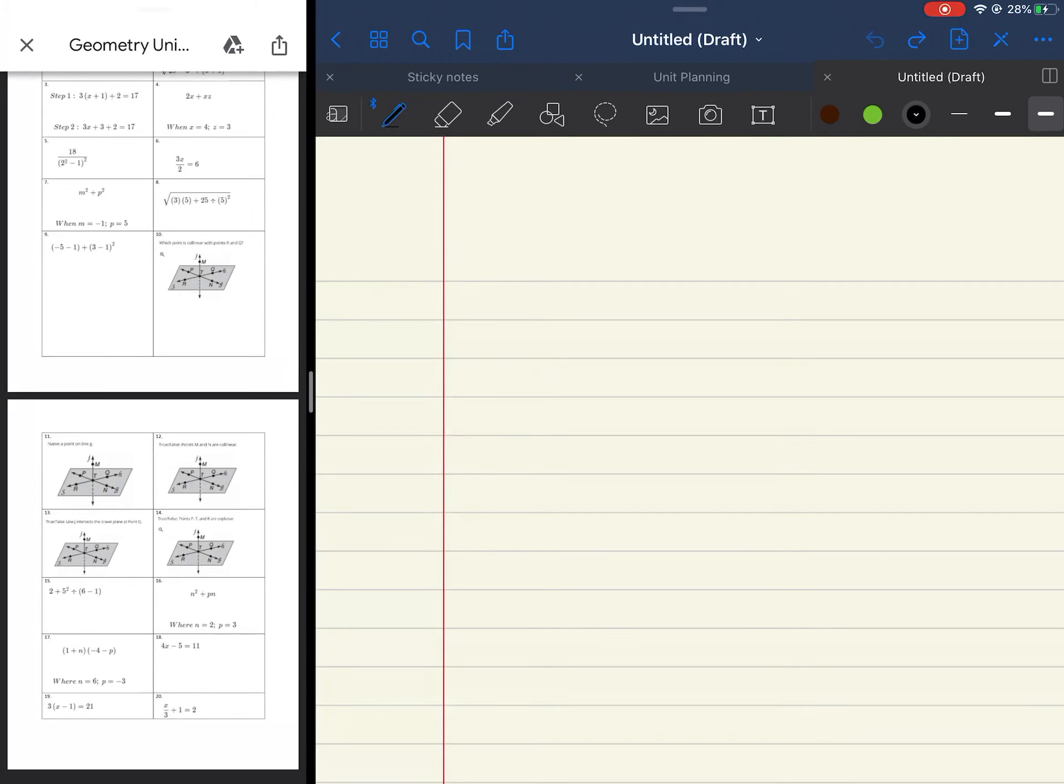Alright, so this is going to serve as your video for your corrections for Unit 1. If you're getting this video, that means you made below a 70, and this is one of the requirements you have to do in order to retest.